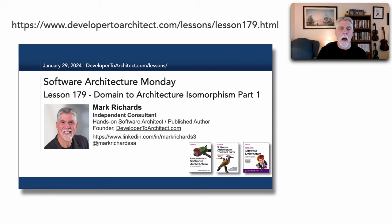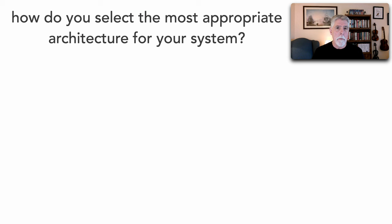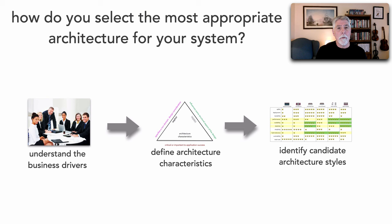In lesson 179 I defined what Domain to Architecture Isomorphism is and showed you a couple of examples. If you haven't looked at lesson 179 yet it would be best to pause this lesson and watch that one first. In lesson 179 we saw a pathway for selecting the most appropriate architecture: understanding the business drivers, translating those to architecture characteristics, and using those characteristics to find the most appropriate architecture. We still ended up with an epic failure because of that next step.